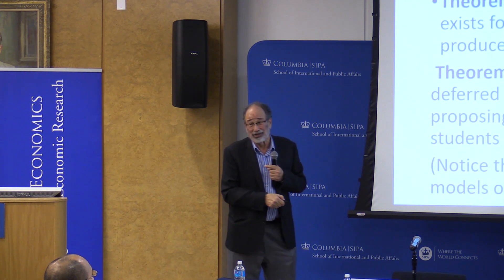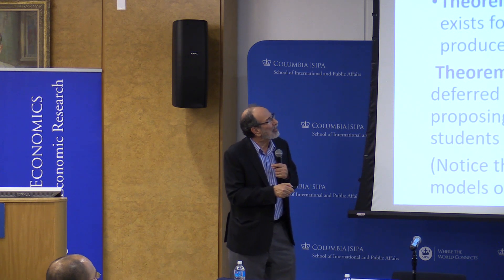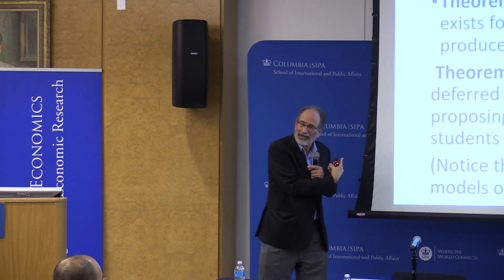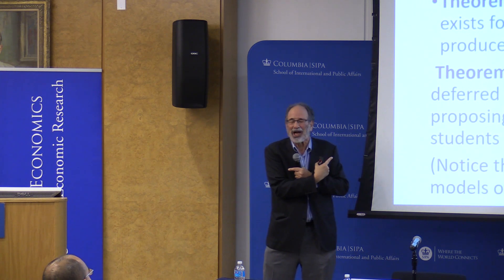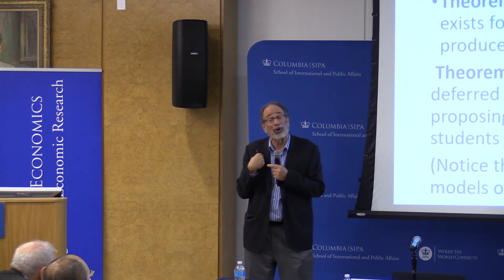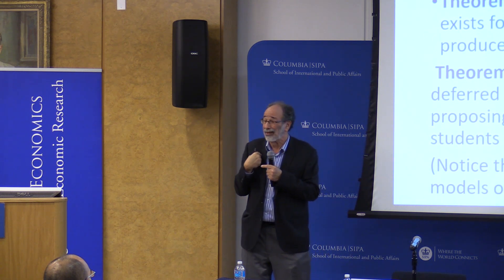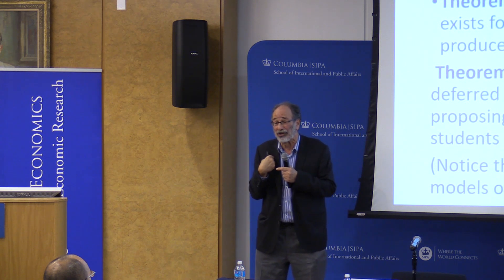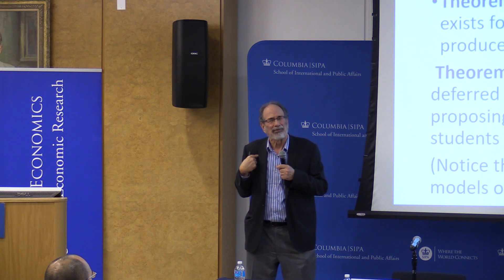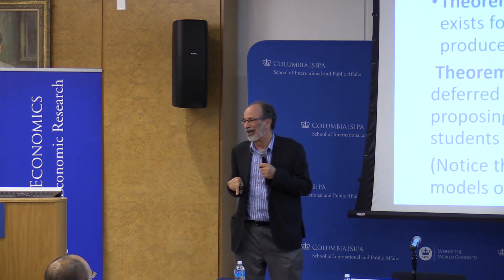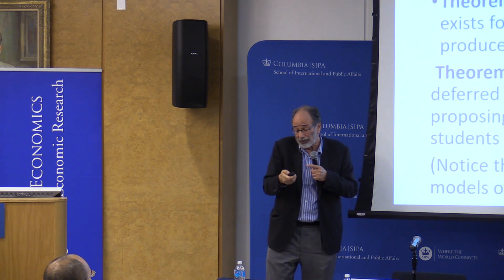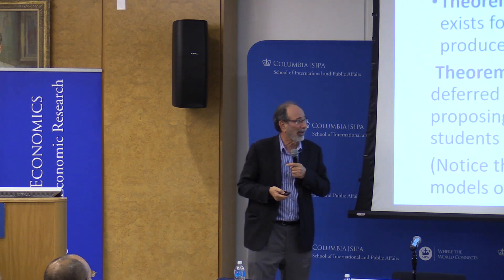Stability is what entices people to come to the market and keeps them there. If I'm matched to my third choice but my second choice would also prefer me, we have big enough strategy sets that we might find each other outside the marketplace. But if I want my second choice and they don't want me, I likely can't force them to hire me. So stability counters the large strategy sets people have, enticing them to follow the marketplace rules.